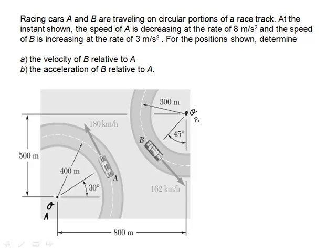Let's take a look at a couple of different examples. In this first one, we'll look at two race cars moving around different parts of a circular track. The speed of A is 180 kilometers per hour, decreasing at a rate of 8 meters per second squared. The speed of B is 162 kilometers per hour, increasing at a rate of 3 meters per second squared. We want to find the velocity of B relative to A and the acceleration of B relative to A.